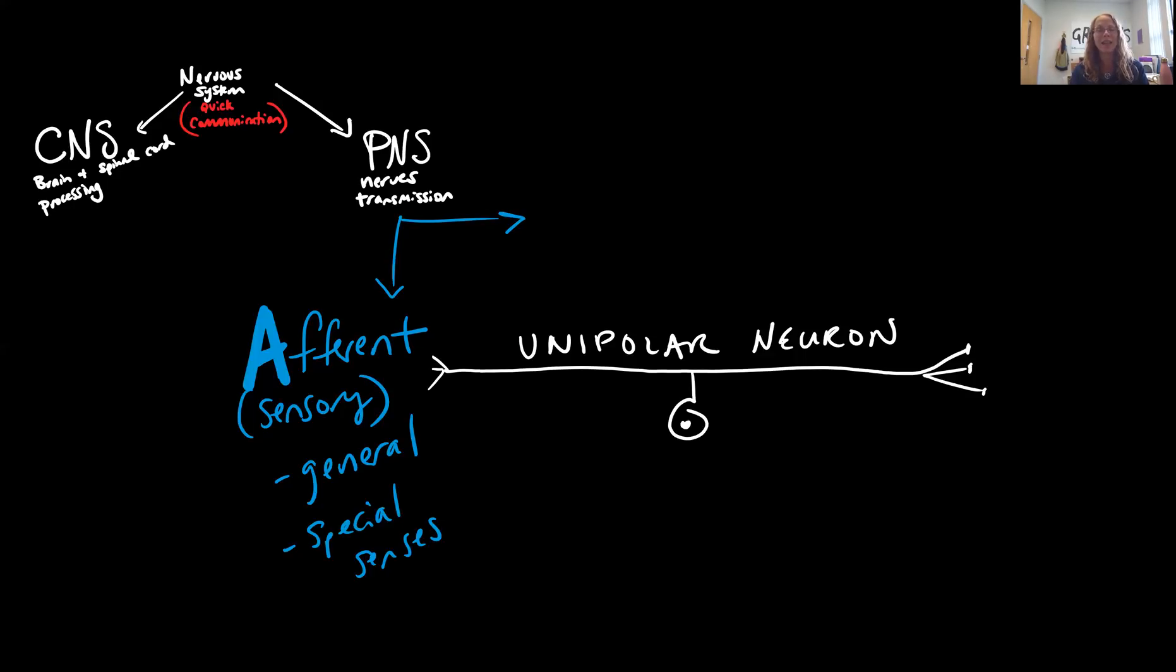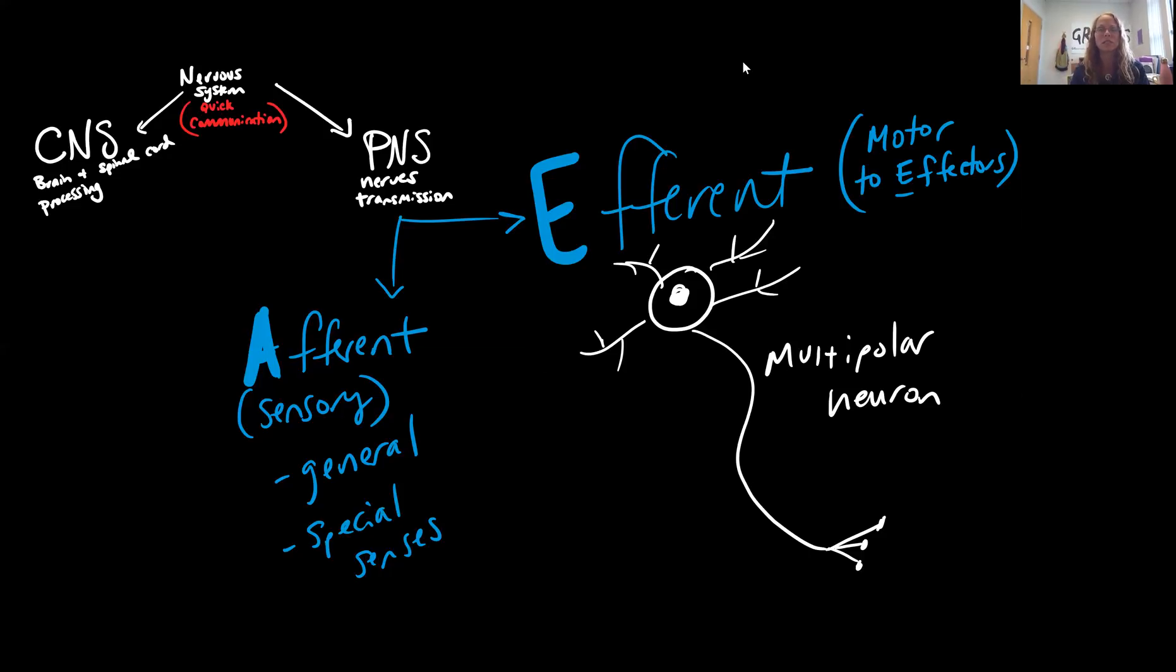The opposite of the afferent division is the efferent division. So hopefully here you can see why I'm trying to emphasize that first sound. Efferent, again, is not really a great pronunciation. It should be efferent, but you may have a hard time hearing the difference between afferent and efferent. So I like to say the afferent and the efferent, just to clarify. The efferent division would be directing responses. So these neurons, these multipolar motor neurons, are synapsing onto those effector tissues, which, remember, in the nervous system, effector tissues can be skeletal muscle, smooth muscle, cardiac muscle, glands, and adipose tissue. So we have five possible types of effector tissues.